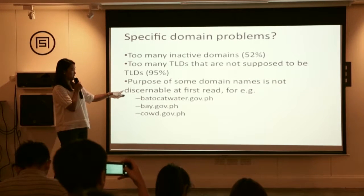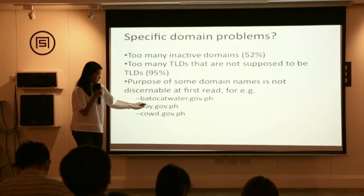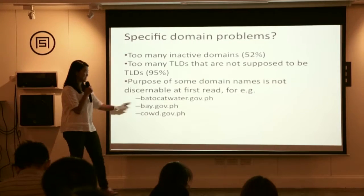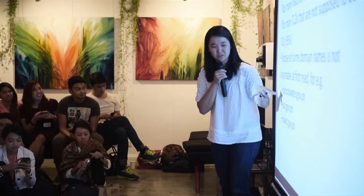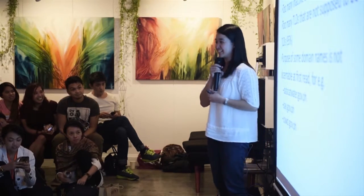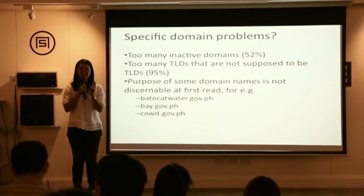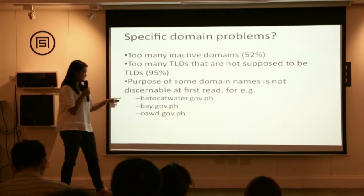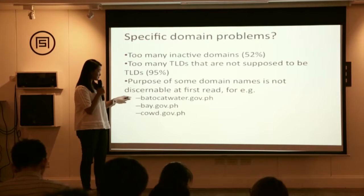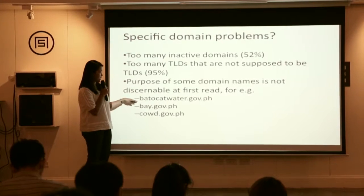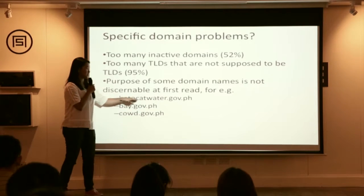Another problem is that the purpose of some domain names is not discernible at first. For example — can you tell what 'T' stands for? It's about water — but which particular agency? It's a water district under the Local Water Utilities Administration — specifically, the municipality of Pato, Maganduanes. It's a water district in Pato, Maganduanes.